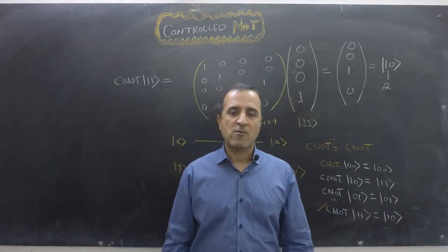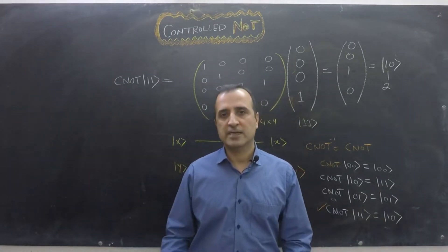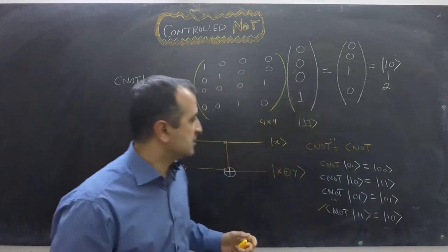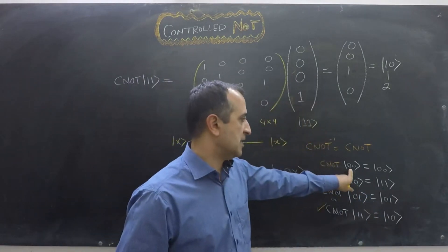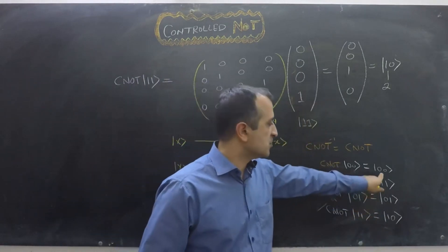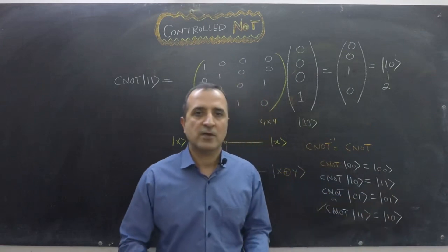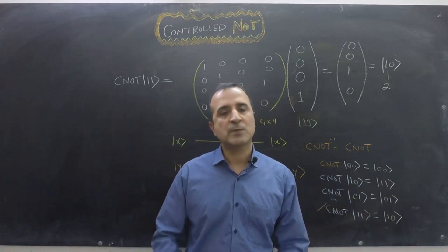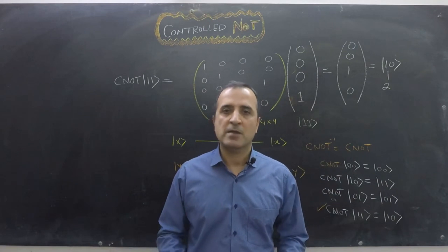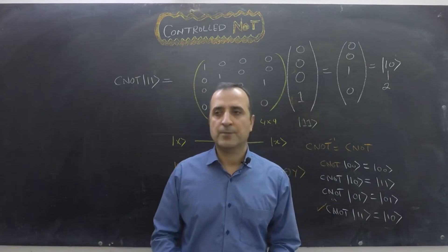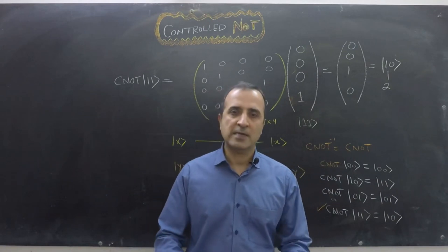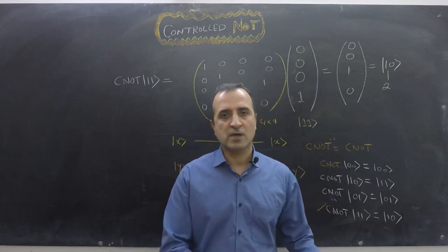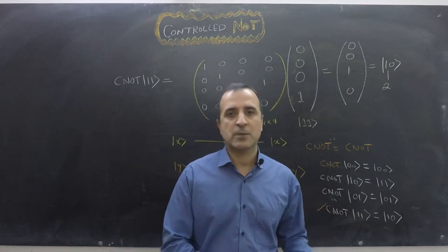So far we have applied CNOT to pure states, where the inputs and outputs were definite basis states. What if we apply CNOT not to a pure state but to a superposition? For example, we could apply a Hadamard gate to |0⟩ to create an equal superposition, and then apply CNOT to that superposition.